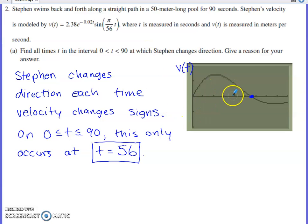So I fired up my calculator and graphed my velocity function. I realized that when velocity is positive, Stephen is moving in the positive direction. When velocity is negative, Stephen's moving in the negative direction. When does he change directions? At that one location where velocity changes signs.